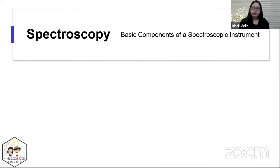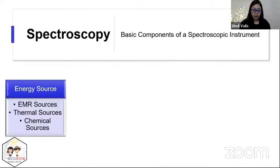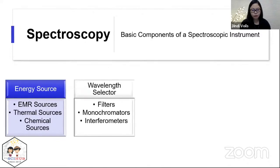Some basic components of a spectroscopic instrument are energy source. So it's either an EMR source. Well, you always have to have an EMR source, thermal sources and chemical sources. And you have wavelength selector, can be a filter, a monochromator or interferometer.